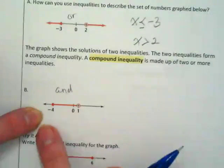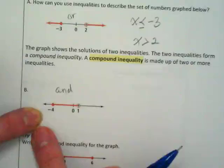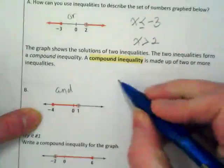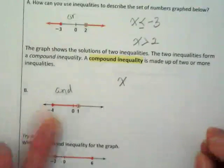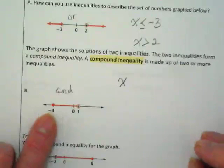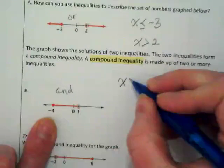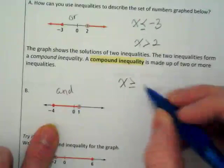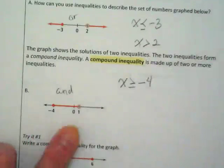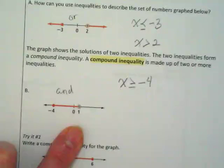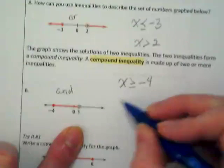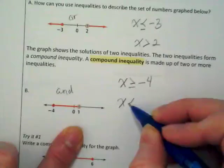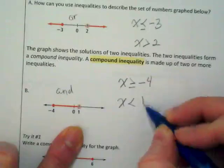How would you write the inequality that's graphed at the 4? Let's use our variable x. What symbol is being represented by this dot? Greater than or equal to? What number? Okay, and then what about this one? I'm hearing x is less than 1.